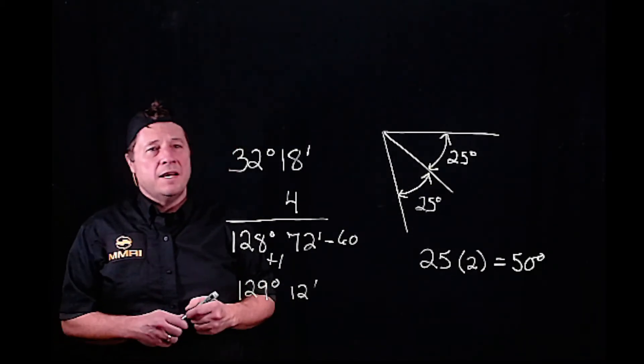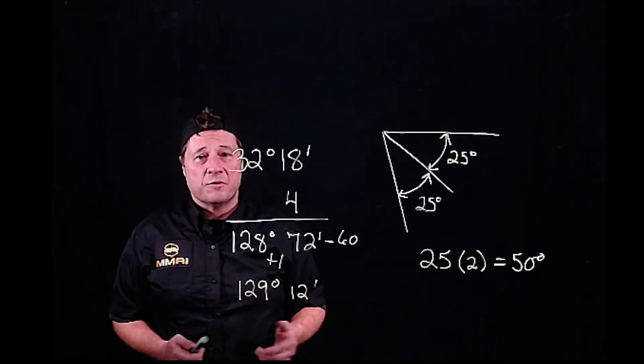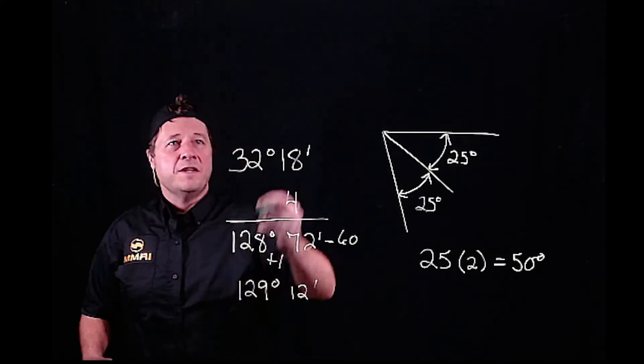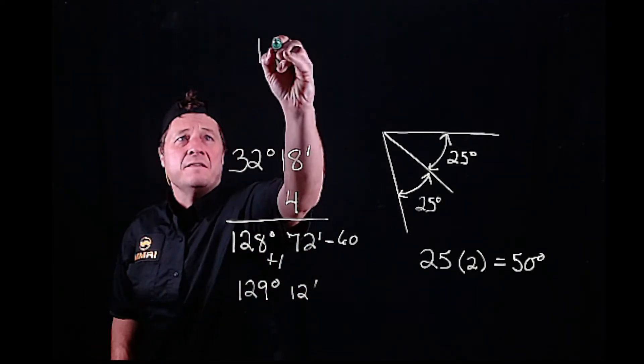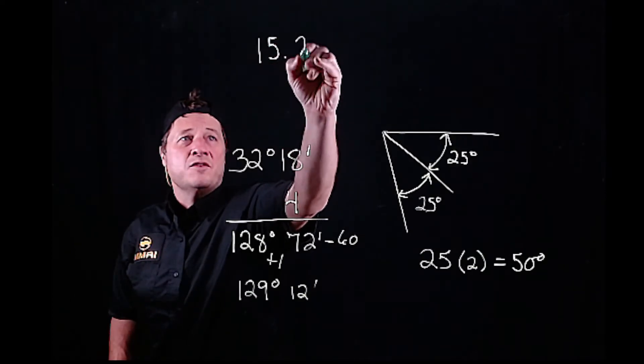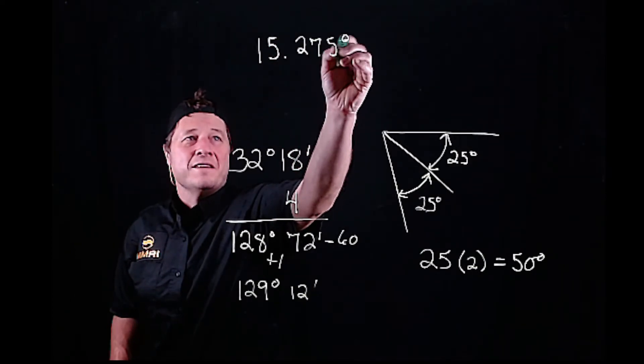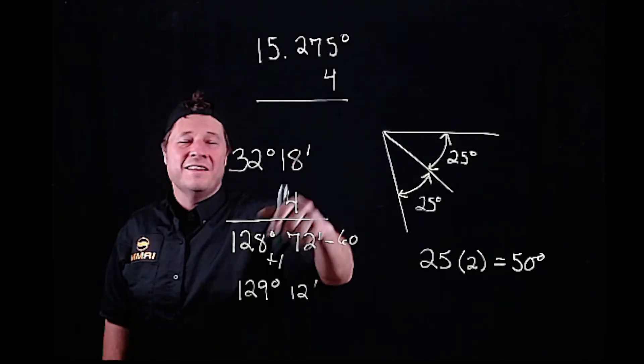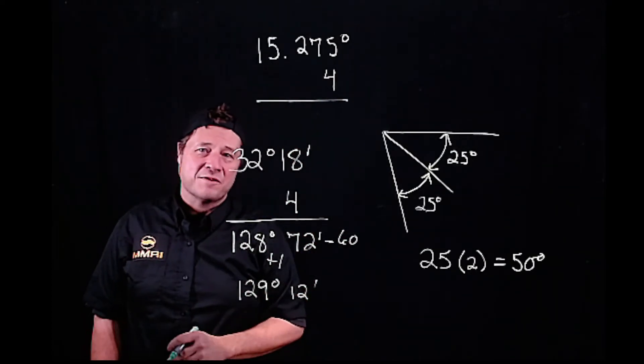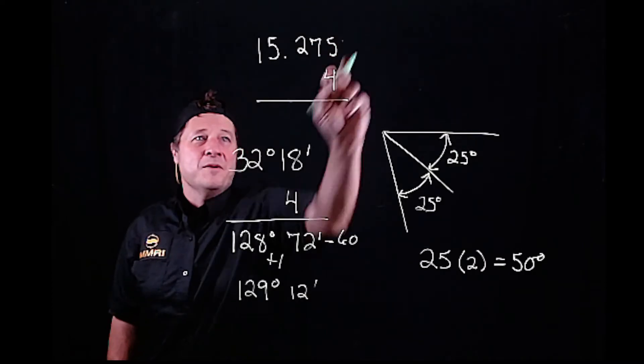It doesn't matter what we're multiplying. If we're multiplying decimal degrees, it's even easier. We had 15.275 degrees times 4. You've done this a billion times since high school. You don't even think about the degrees.